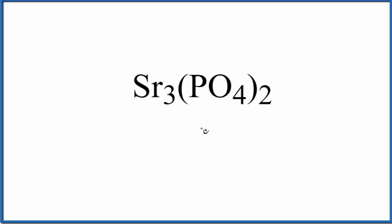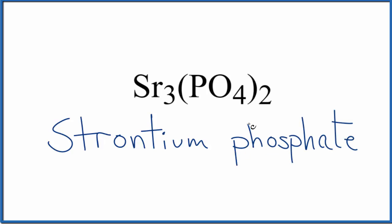So let's first write the name for Sr, that's strontium. And for PO4, this is a polyatomic ion. So you either memorize that this is the phosphate ion, or if you're allowed you look this up on a table of polyatomic ions. That makes the name for Sr3(PO4)2, strontium phosphate.